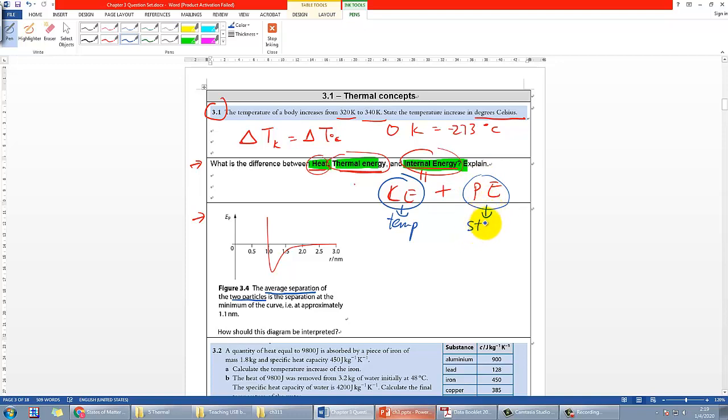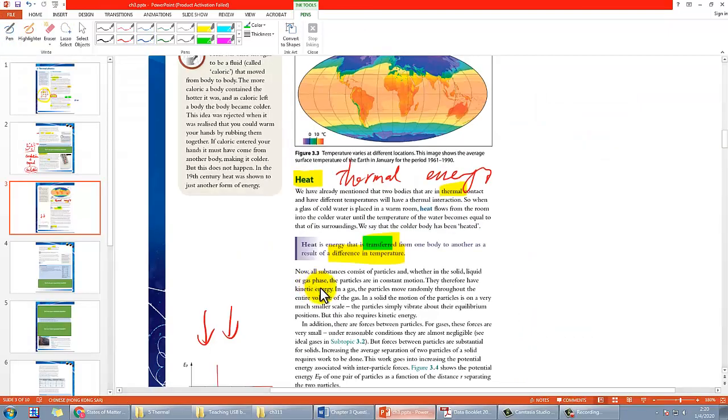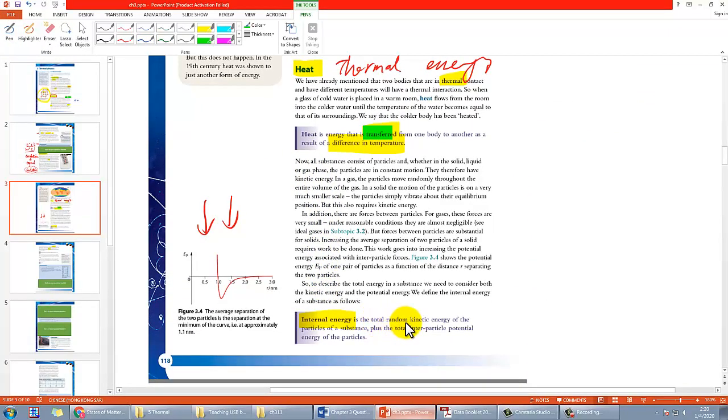For PE, it's something to do with the state, which means the molecular force between the particles, and that will refer to the potential energy. So all together then that would be the internal energy. You can also find it here - it's the total random kinetic energy of the particles plus the total inter-particle potential energy of the particles.